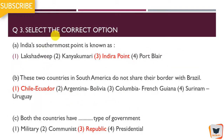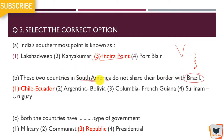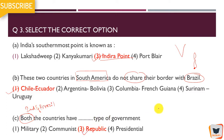Select the correct option. India's southernmost point is known as Indira Point, located in the Andaman and Nicobar Islands. The two countries in South America that do not share a border with Brazil are Chile and Ecuador. Both India and Brazil have a republic democratic government — people elect their representatives through voting.